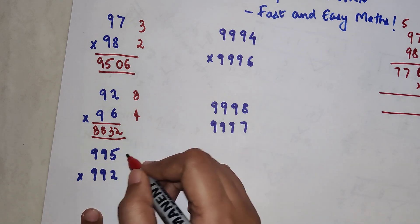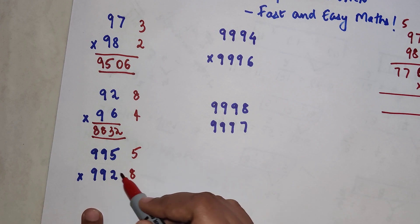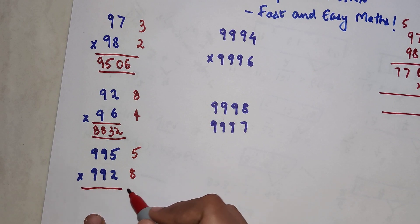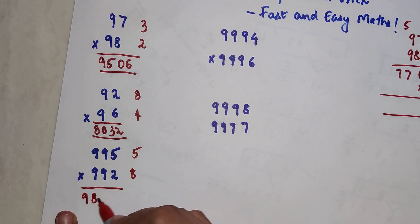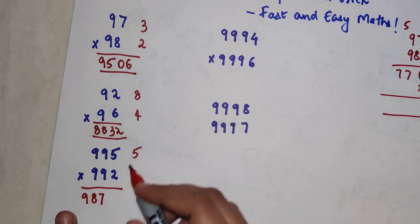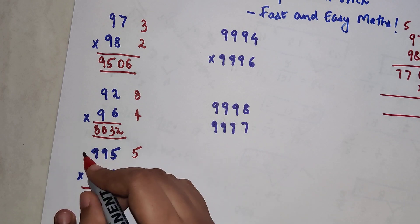The difference is 5, the difference is 8. So we're going to subtract 995 by 8, so your answer becomes 987. And your multiplication gets you, 5 into 8 gets you 40.